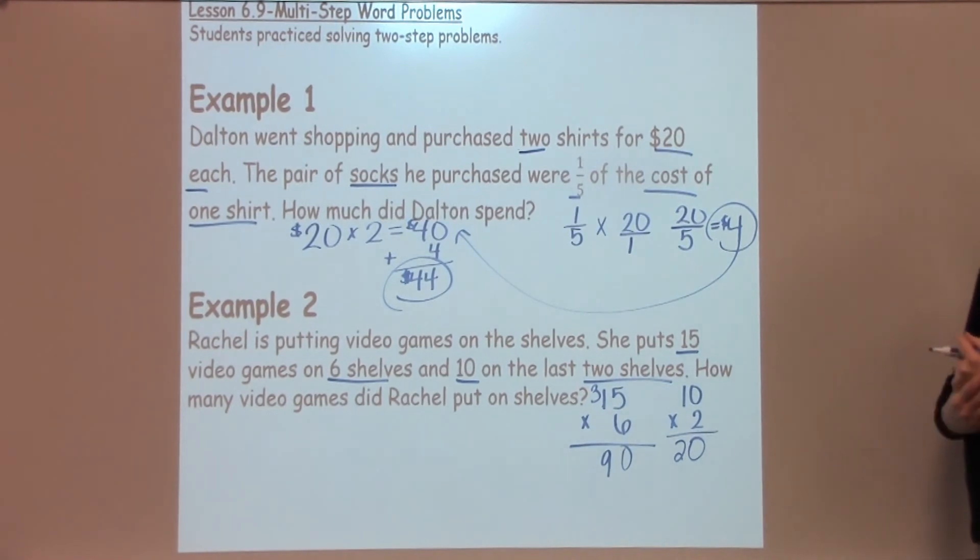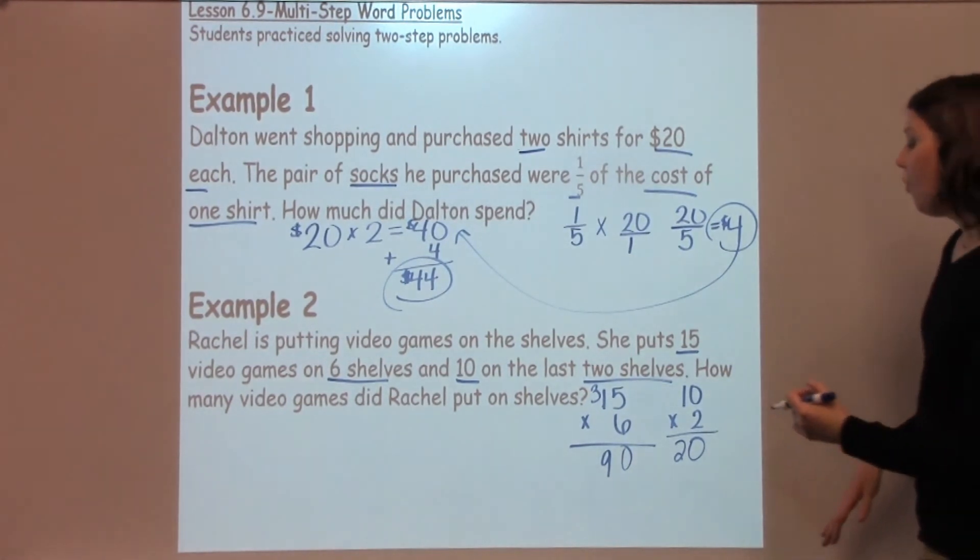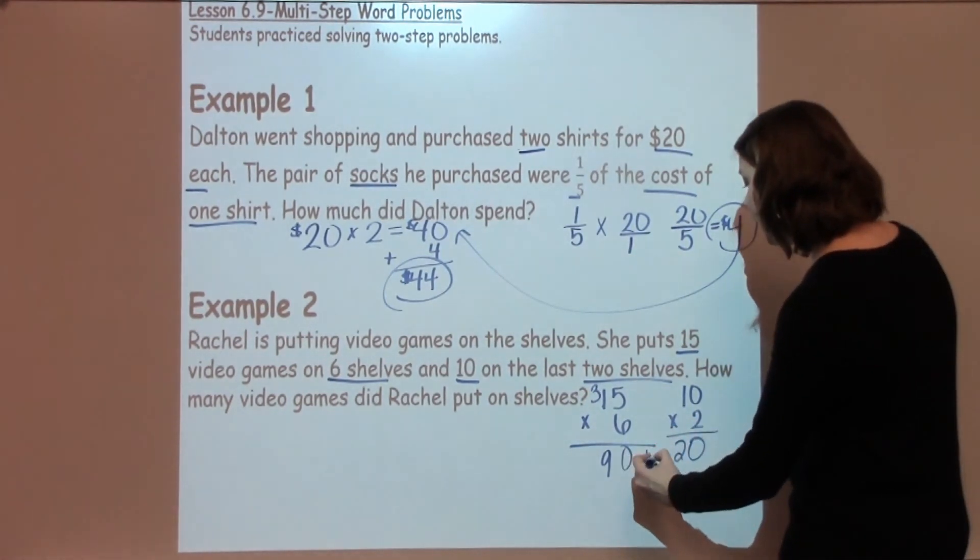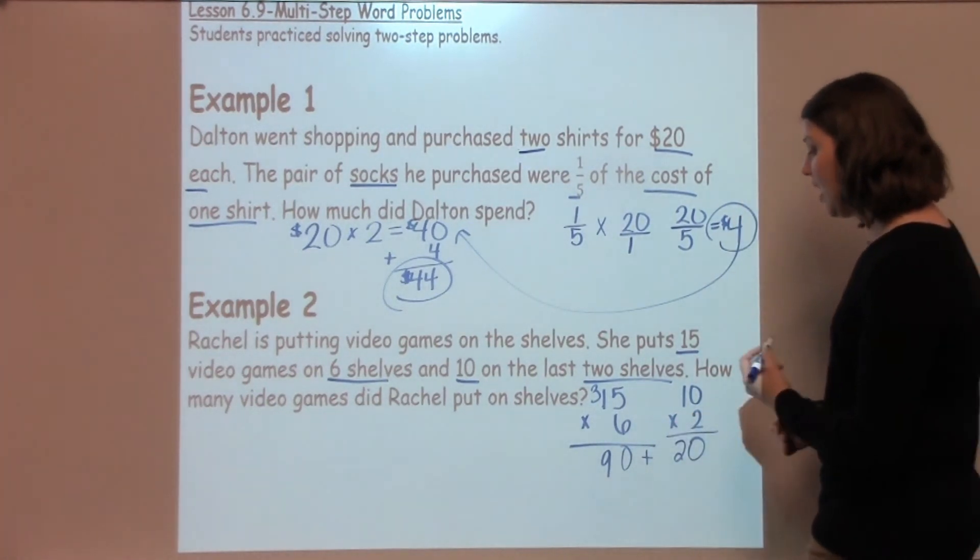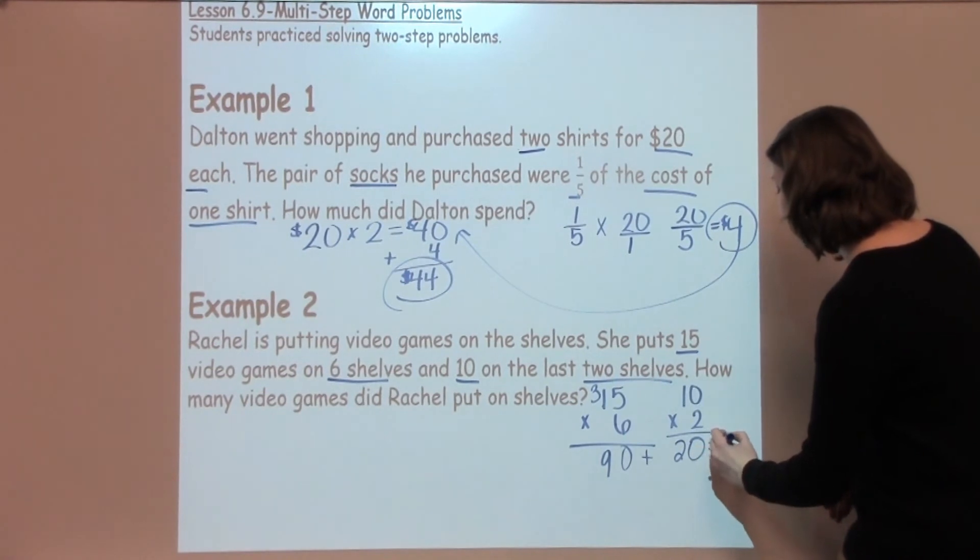Now, I need to think about this. How many video games did Rachel put on the shelves? When I look at this, I need to take my 90 plus my 20. When I add 90 plus 20, I am going to get 110.